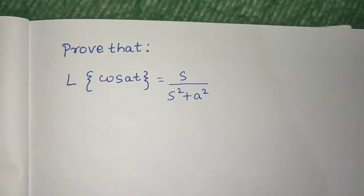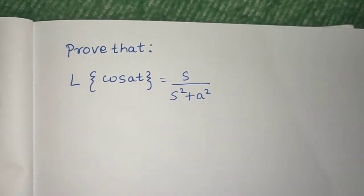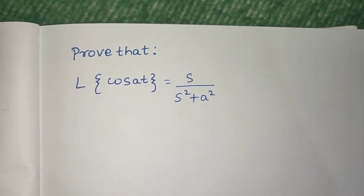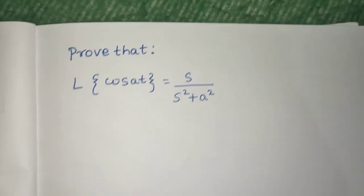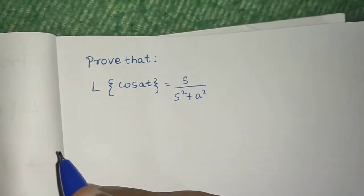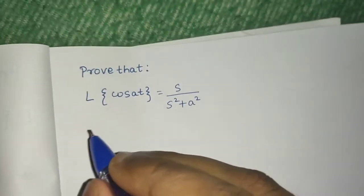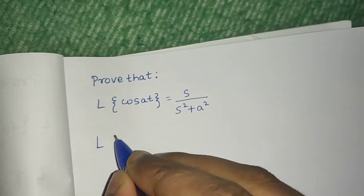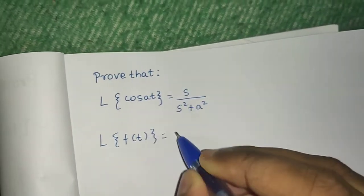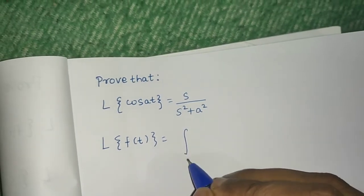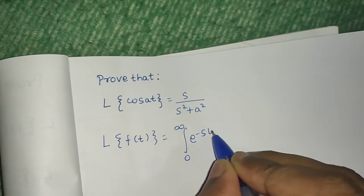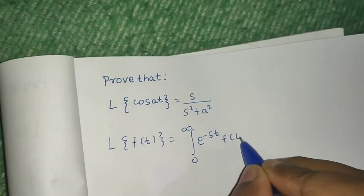Let's solve one question from Laplace transform. We need to prove that Laplace of cos(at) equals s divided by s² plus a². So let's begin with the proof. We know that Laplace of f(t) is the integral from 0 to infinity of e^(−st) into f(t) dt.